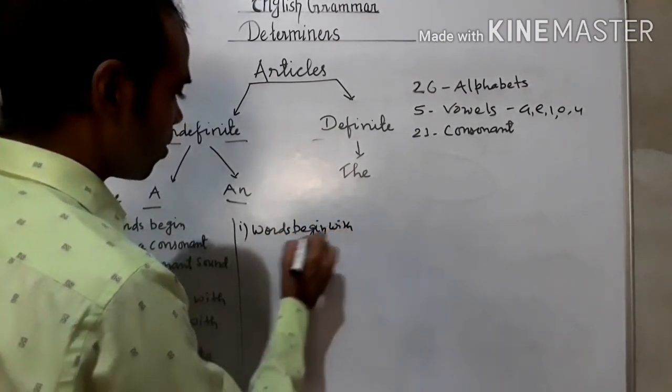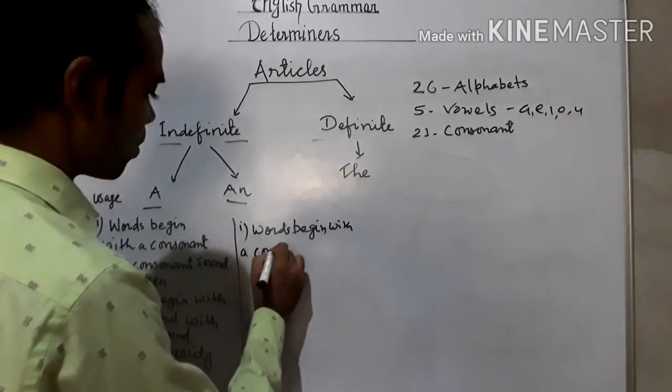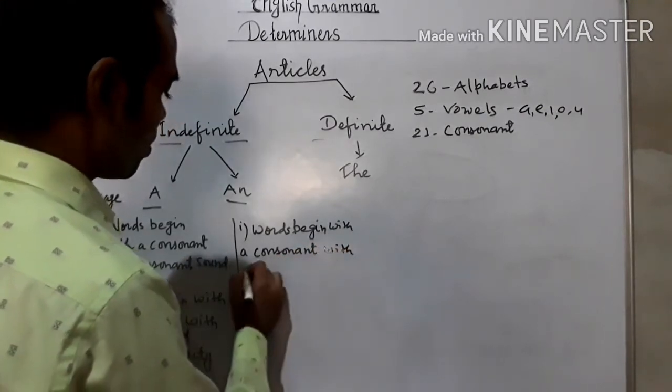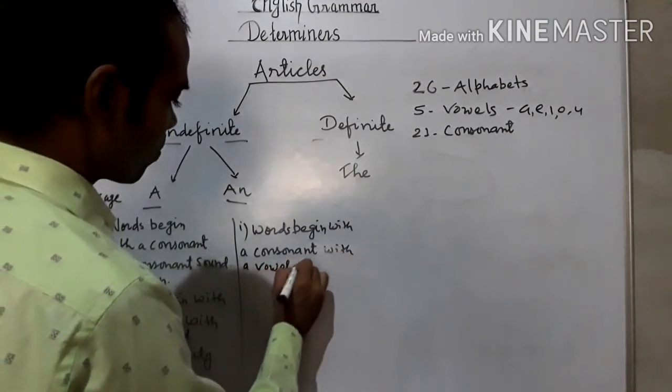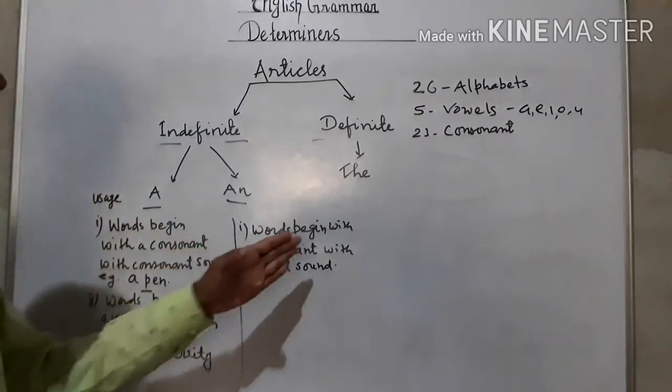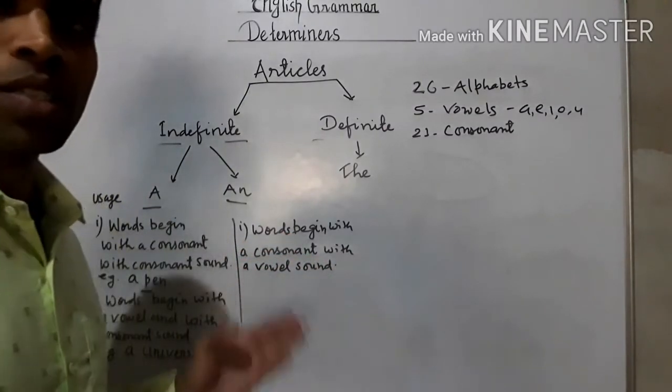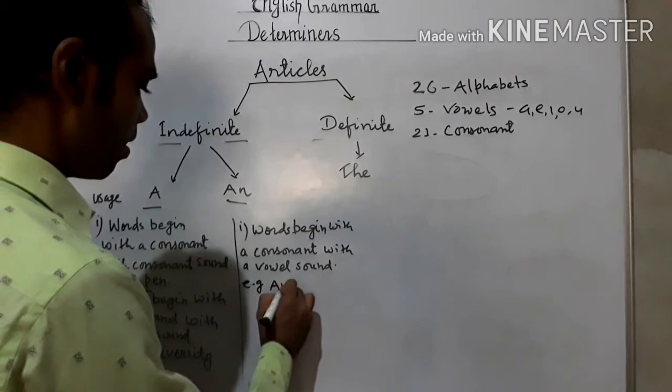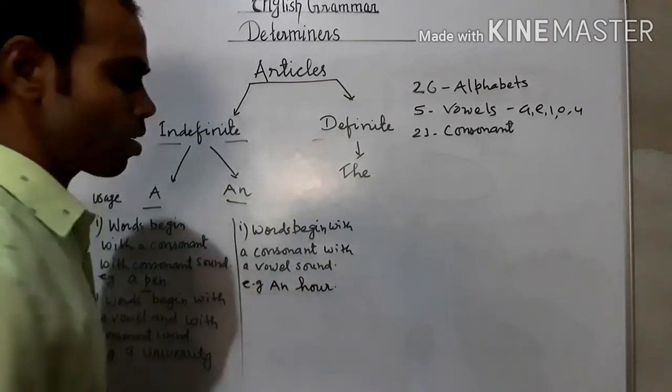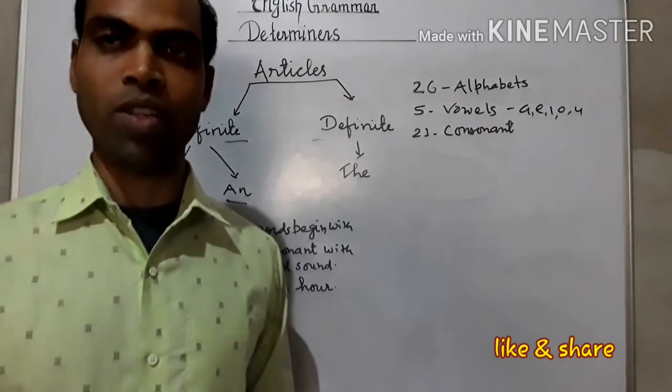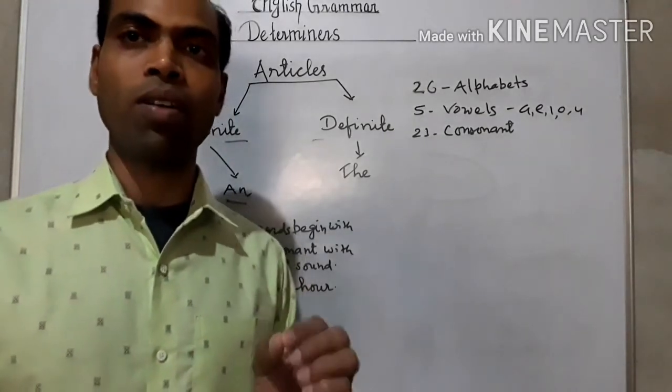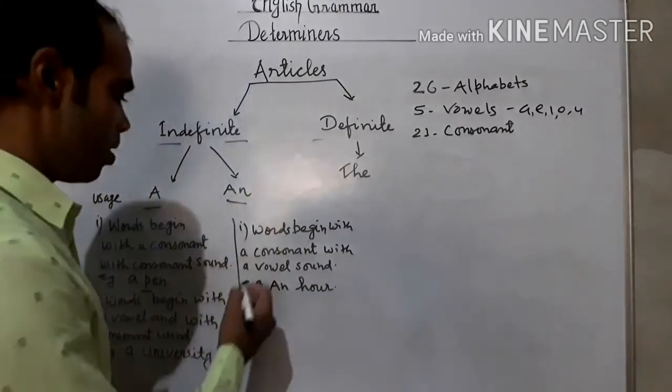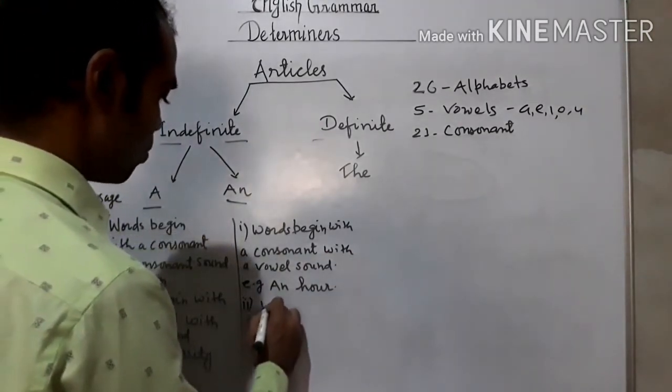Next: words begin with a consonant but with a vowel sound. Then we will use AN. For example: an hour. H-O-U-R. Hour - in hour, it is an O sound, which is a vowel sound. So it is a vowel sound.